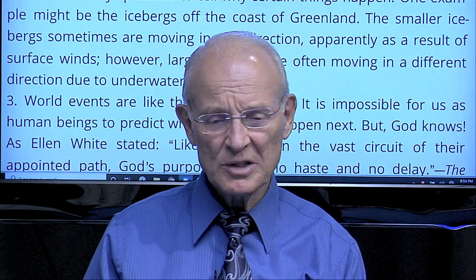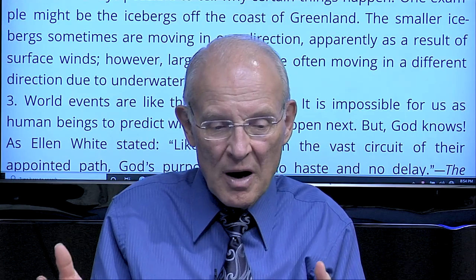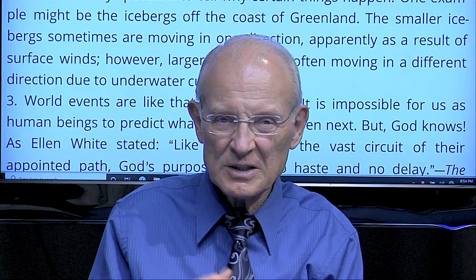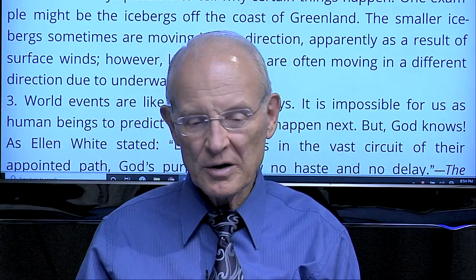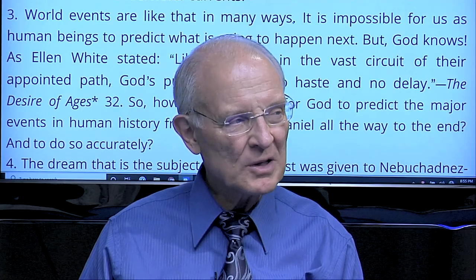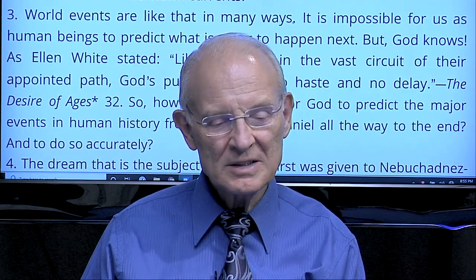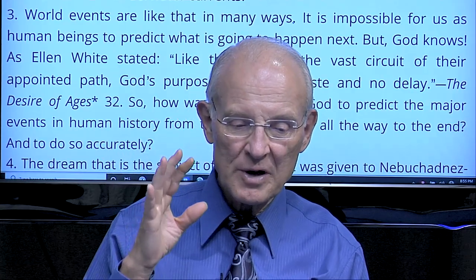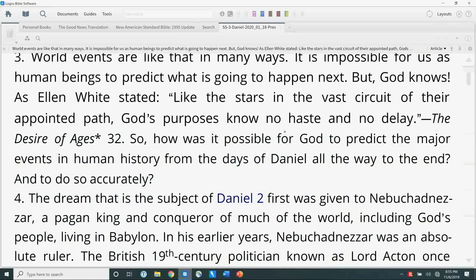One example might be icebergs off the coast of Greenland. The smaller icebergs sometimes are moving in one direction while the larger ones seem to be moving in a different direction — the smaller ones moved by the winds, the larger, deeper ones by underwater currents. World events are like that. It is impossible for us as human beings to predict what is going to happen next, but God knows. As Ellen White stated: 'Like the stars in the vast circuit of their appointed path, God's purposes know no haste and no delay.'